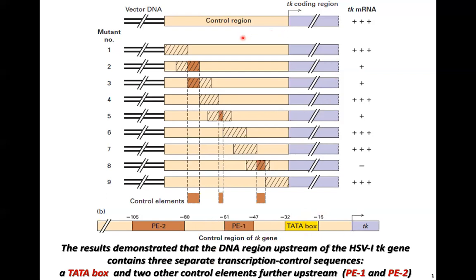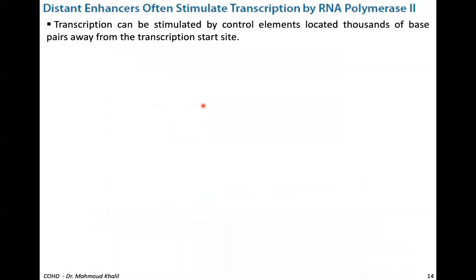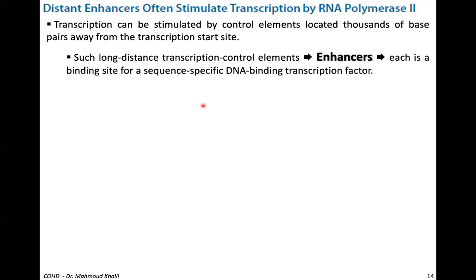Scientists also found distant DNA sequences, which they call enhancers, that often stimulate transcription by RNA polymerase II. Transcription can be stimulated by control elements located thousands of base pairs away from the transcription start site. Such long-distance transcription control elements are called enhancers. Each enhancer is a binding site for a sequence-specific DNA binding transcription factor — a trans-element.